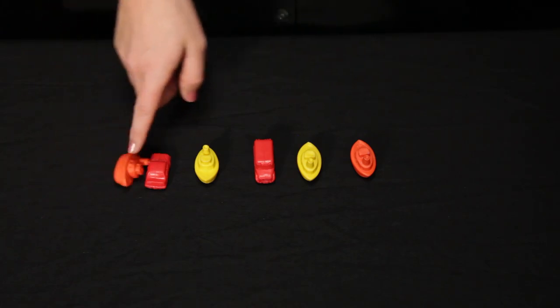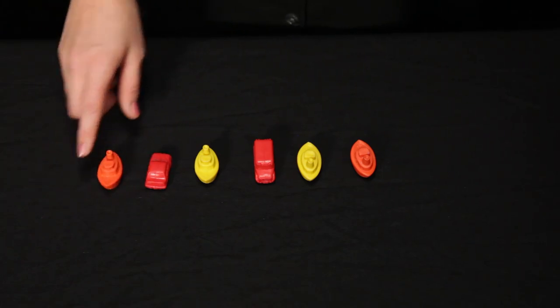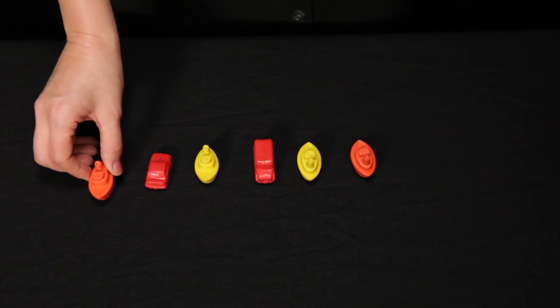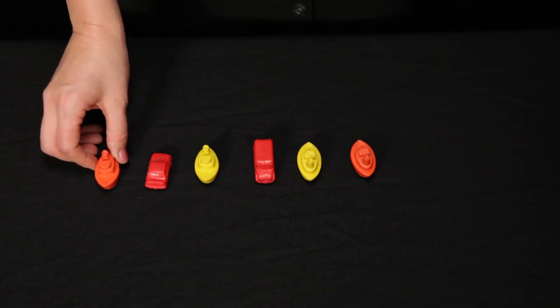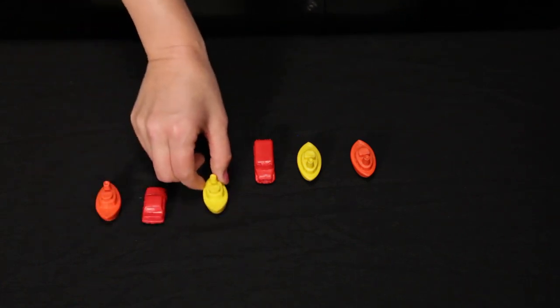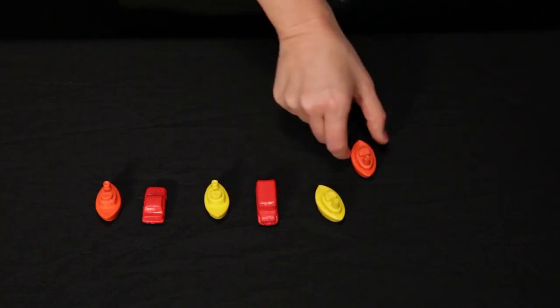You tie stable order with one-to-one correspondence, which means you give each object one count and only one count, like this. One, two, three, four, five, six.